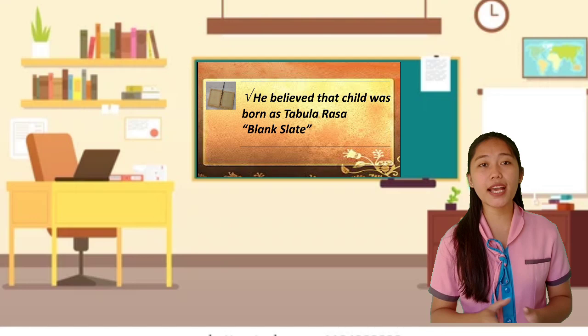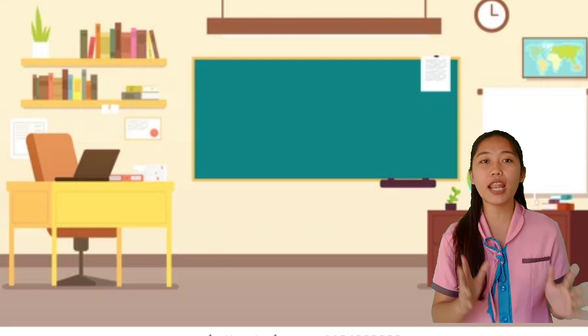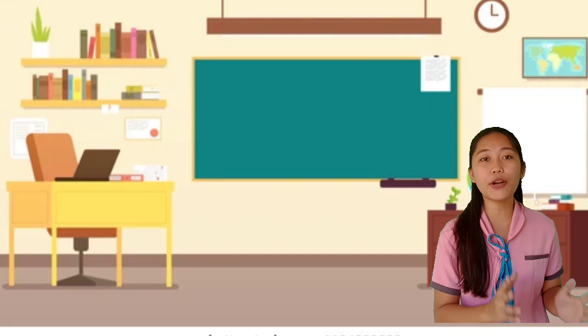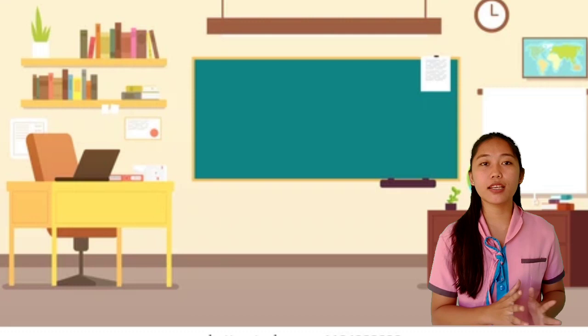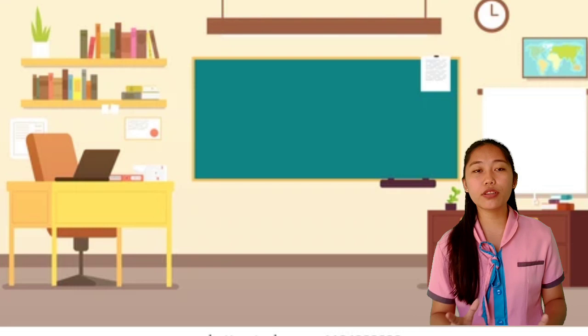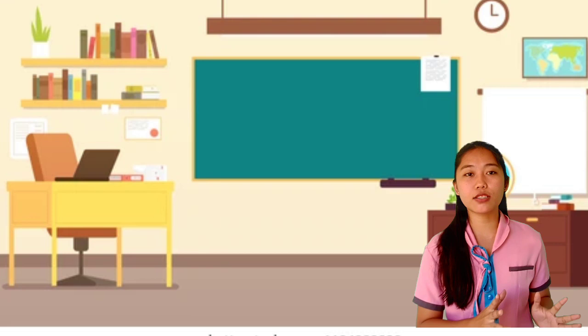He believed that a child was born as tabula rasa or blank slate. If what you have known and who you are right now, that is an accumulation of all things you have experienced in your life, that is accumulation of the dealing you have with the people around you or with your society. John Locke was known in his theory that a child was born as tabula rasa or blank slate. So, tabula rasa or blank slate means that when the child is born, they know absolutely nothing.